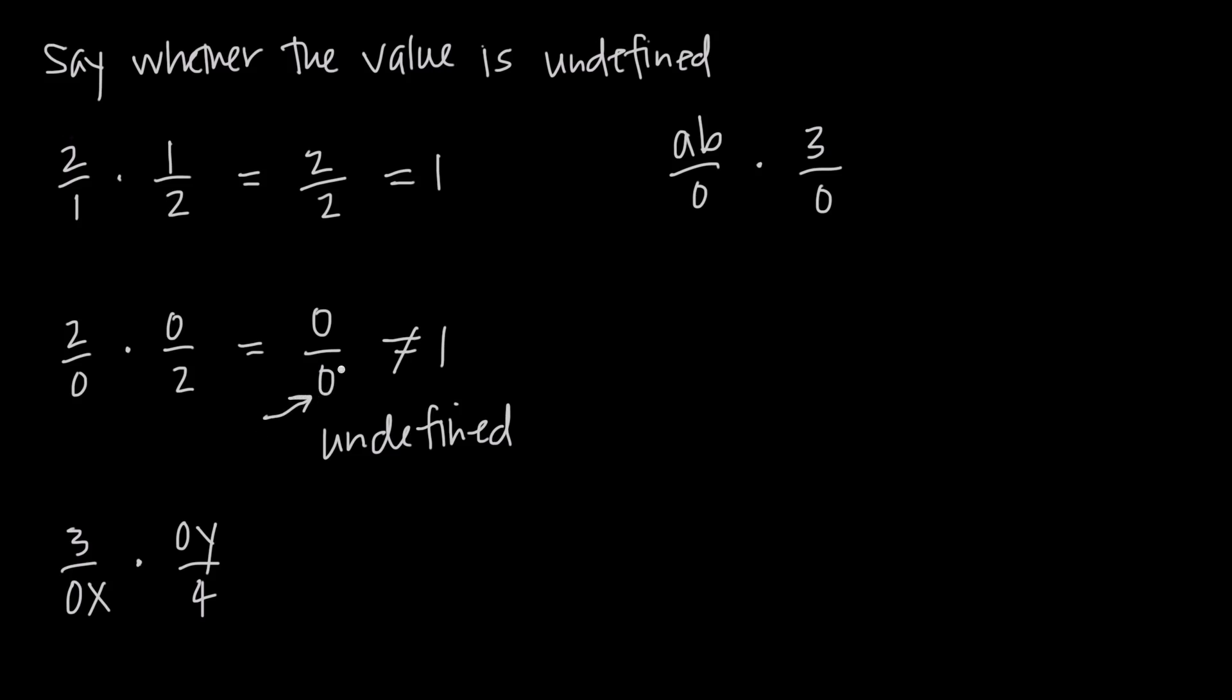We can never have 0 in our denominator. So this value is not equal to 1. In fact, it's undefined. And it doesn't matter what we might be multiplying by 0 in our denominator. If we have a 0 in our denominator, it'll be undefined.